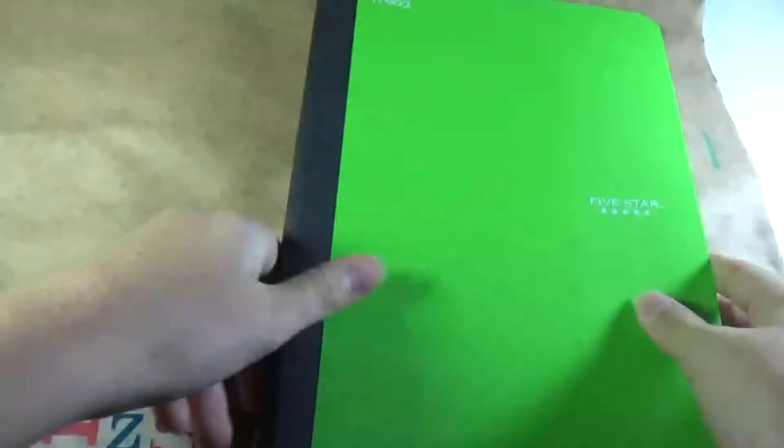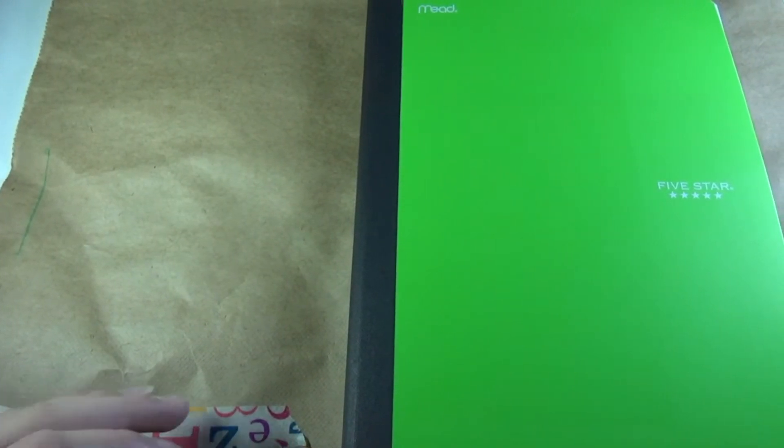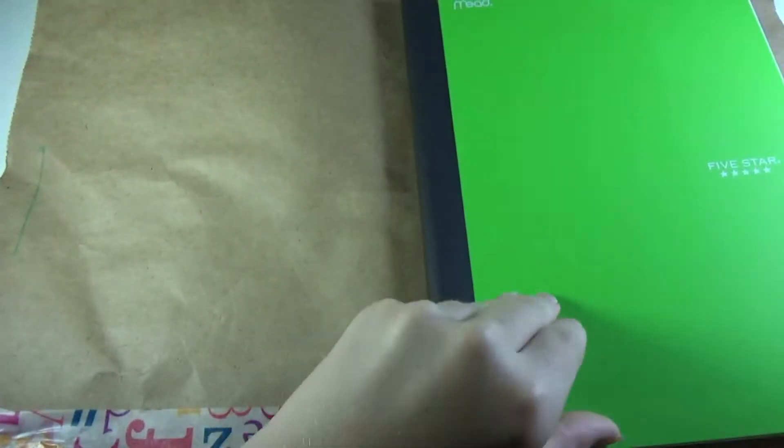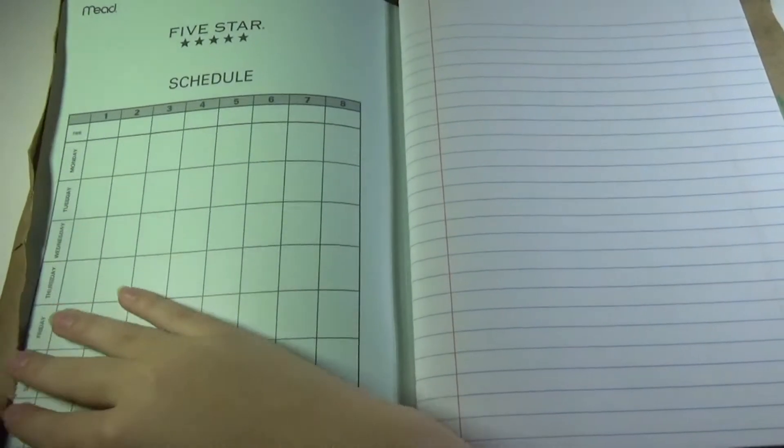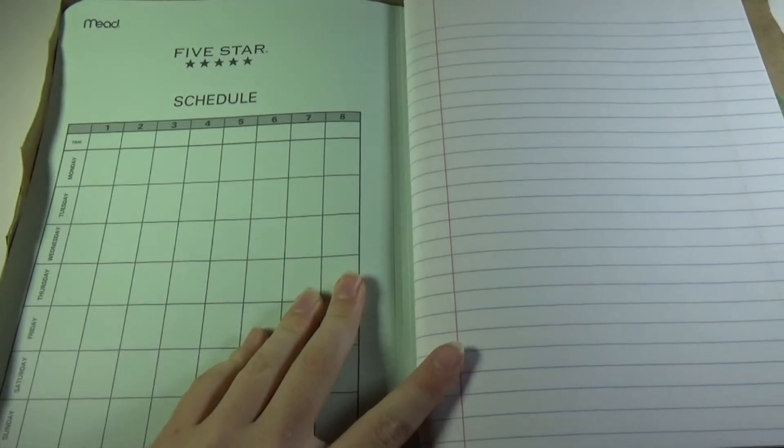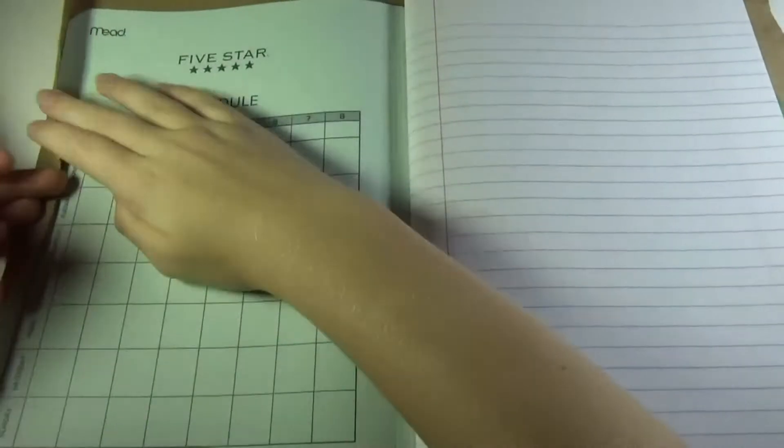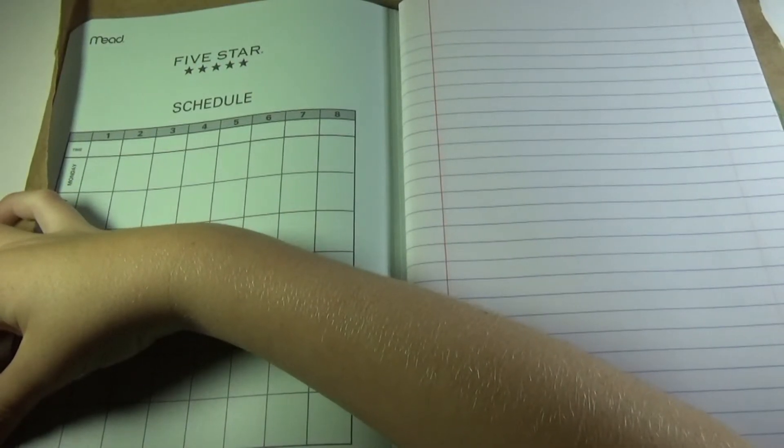Once you're done, I did accidentally cut one part so I had to tape it but you won't see that because it's inside. Take the notebook and place it back down and start folding over the edges, and you can use tape or glue or whatever you have on you to secure it down onto the notebook.